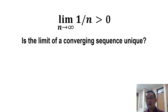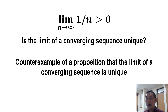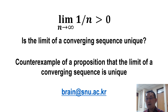Thus, this casts doubt on the proposition that the limit of a converging sequence is unique. In the next video, I will show a counterexample of the proposition that the limit of a converging sequence is unique, thereby showing that the proposition itself is flawed. Please send a comment to this address. Thank you very much.